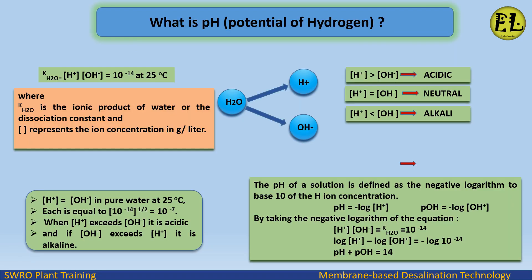The ionic product of water: Kw = [H⁺][OH⁻] = 10⁻¹⁴ at 25°C, where Kw is the ionic product or dissociation constant, representing ion concentration in grams per liter. In pure water at 25°C, [H⁺] = [OH⁻] = (10⁻¹⁴)^(1/2) = 10⁻⁷. When [H⁺] exceeds [OH⁻] the solution is acidic; when [OH⁻] exceeds [H⁺] the solution is alkaline.